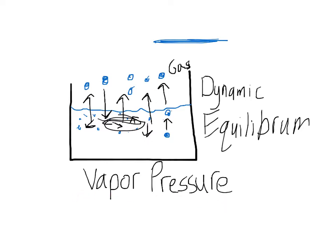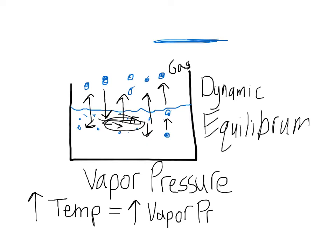The vapor pressure is proportional to the amount of kinetic energy that the water molecules have, and kinetic energy is temperature. So if we increase the temperature, we increase the kinetic energy of the water molecules, and they're going to be jumping out at a higher rate. The rate at which they jump out is proportional to the vapor pressure. So increasing temperature increases vapor pressure, and therefore they're going to be pushing out more.